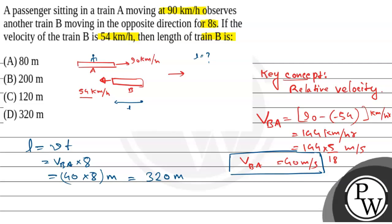So our answer is option D, the length of train B is 320 meters. Hope you understand it. Best of luck.